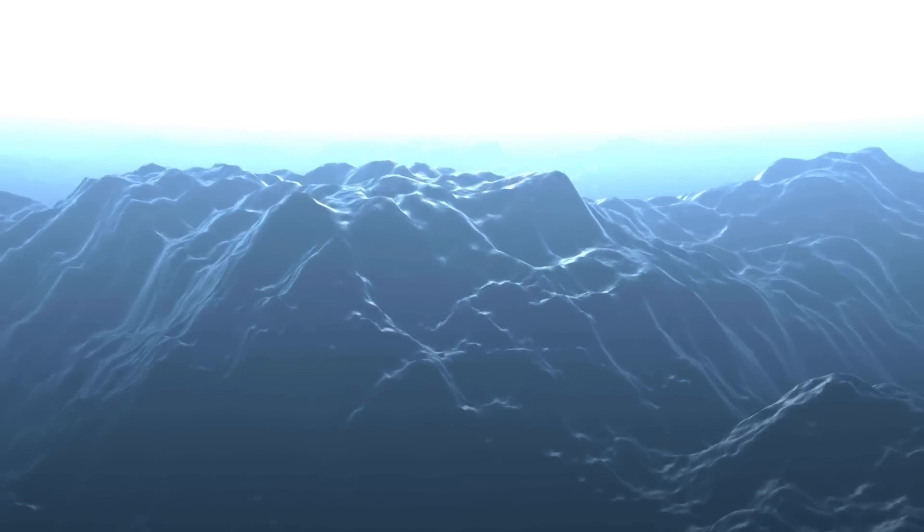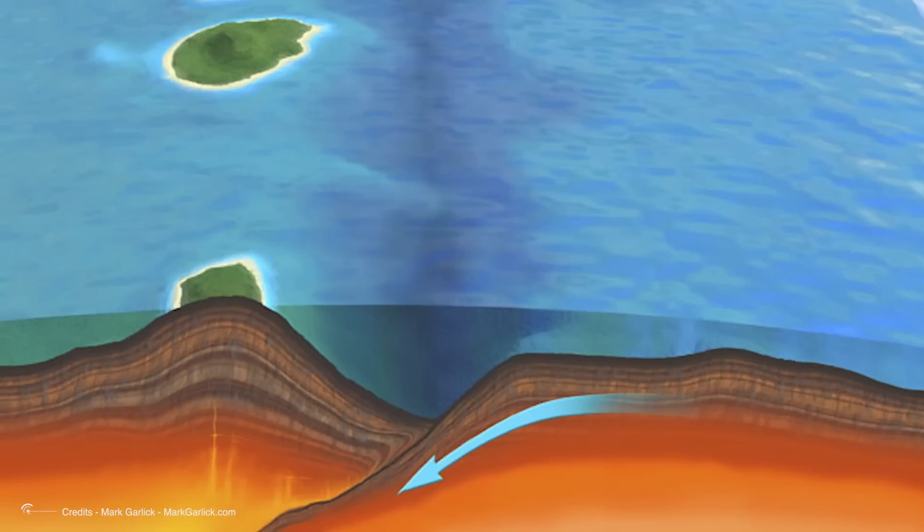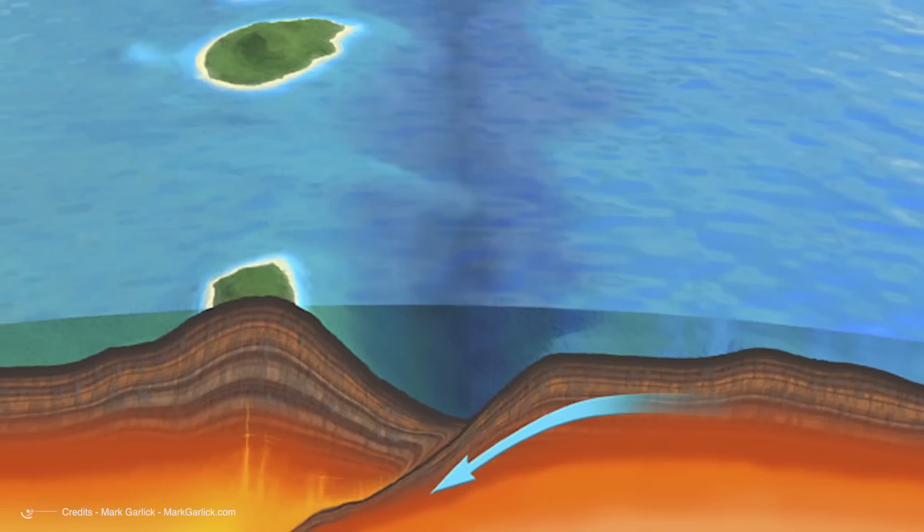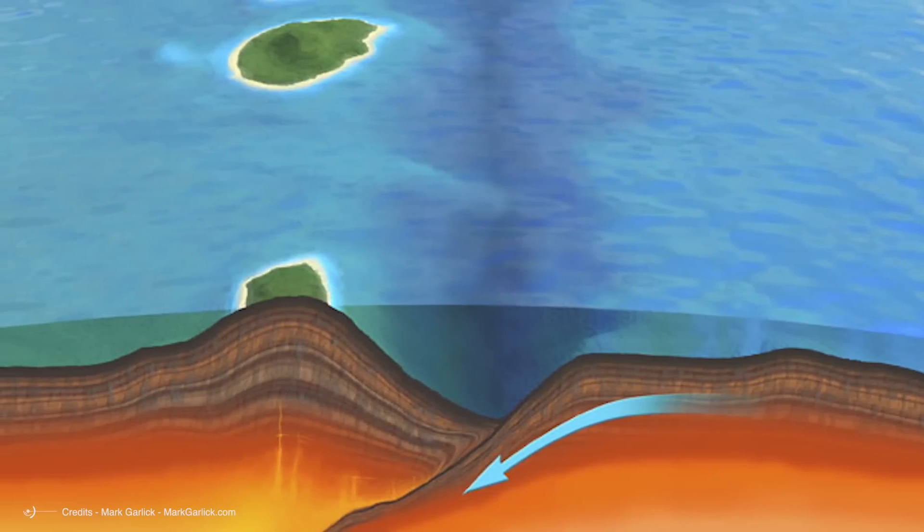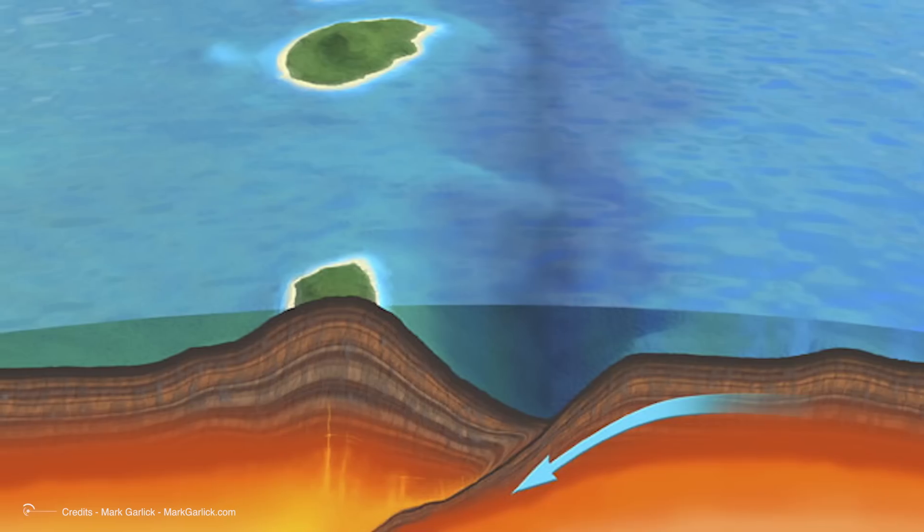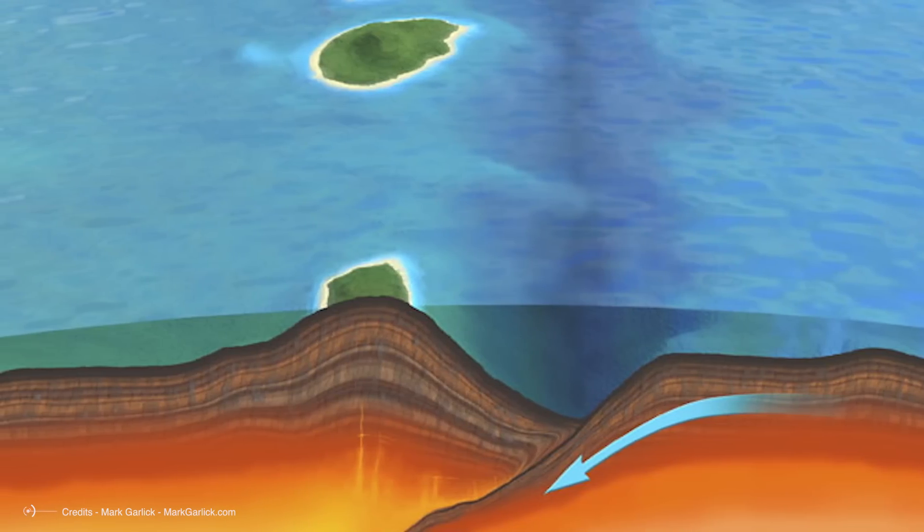The size of the tsunami depends on factors like the magnitude of the earthquake, the amount of seafloor displacement, and the geometry of the subduction zone. Larger earthquakes with greater vertical uplift tend to produce bigger tsunami waves. Subduction zones with a steep offshore slope, like the Cascadia region, are also prone to generating particularly destructive tsunamis.